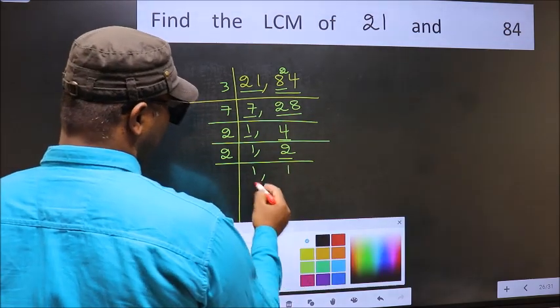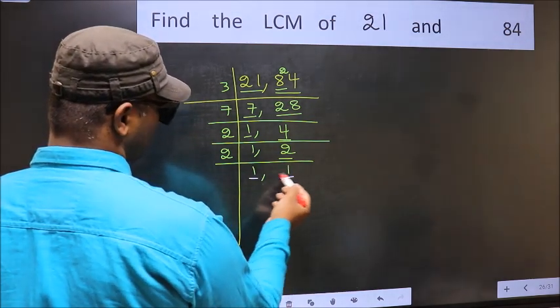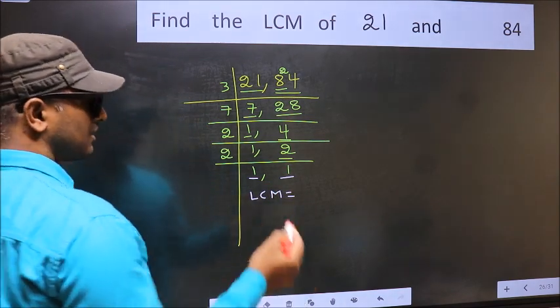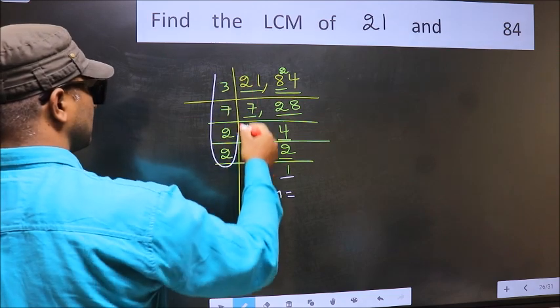So we got 1 in both the places. So our LCM is, LCM is the product of these numbers.